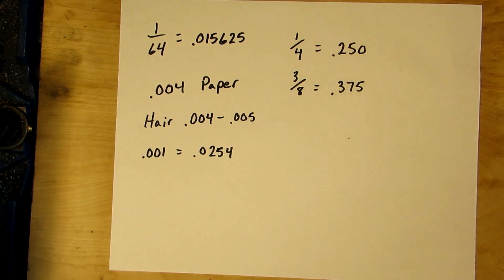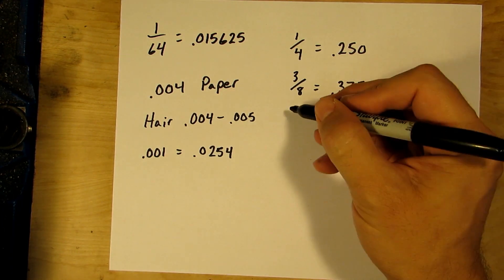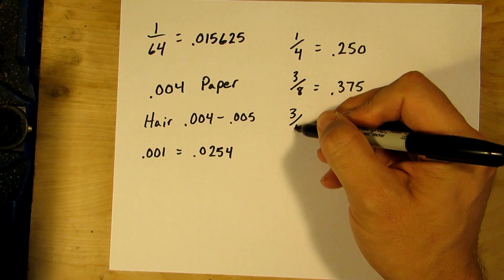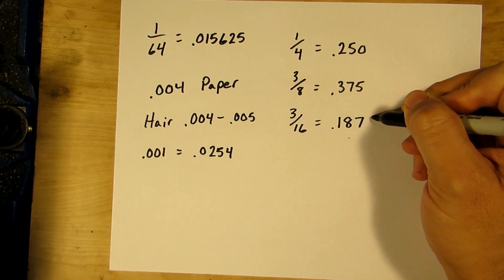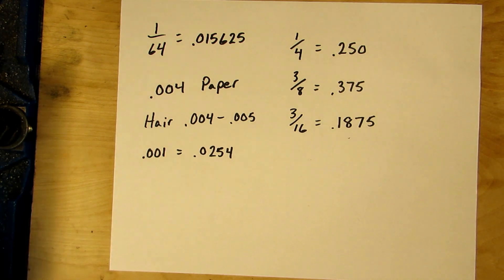But then you've got some other ones. Let's talk about three sixteenths for instance. That is 0.1875.